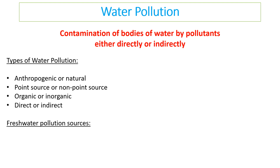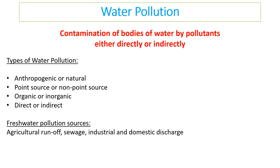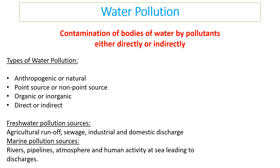Freshwater pollution sources are often agricultural, sewage, industrial, or domestic-related releases, whereas marine pollution often focuses on pipelines going into the sea, atmospheric deposition, or human activities at sea such as oil development, leading to discharges.